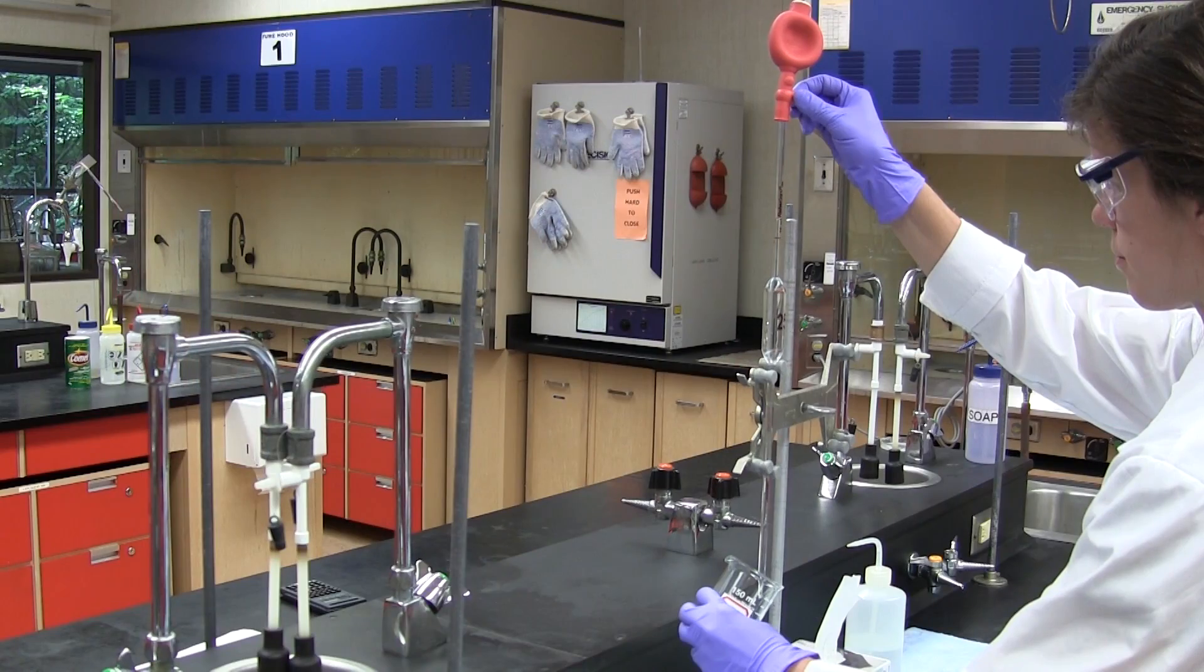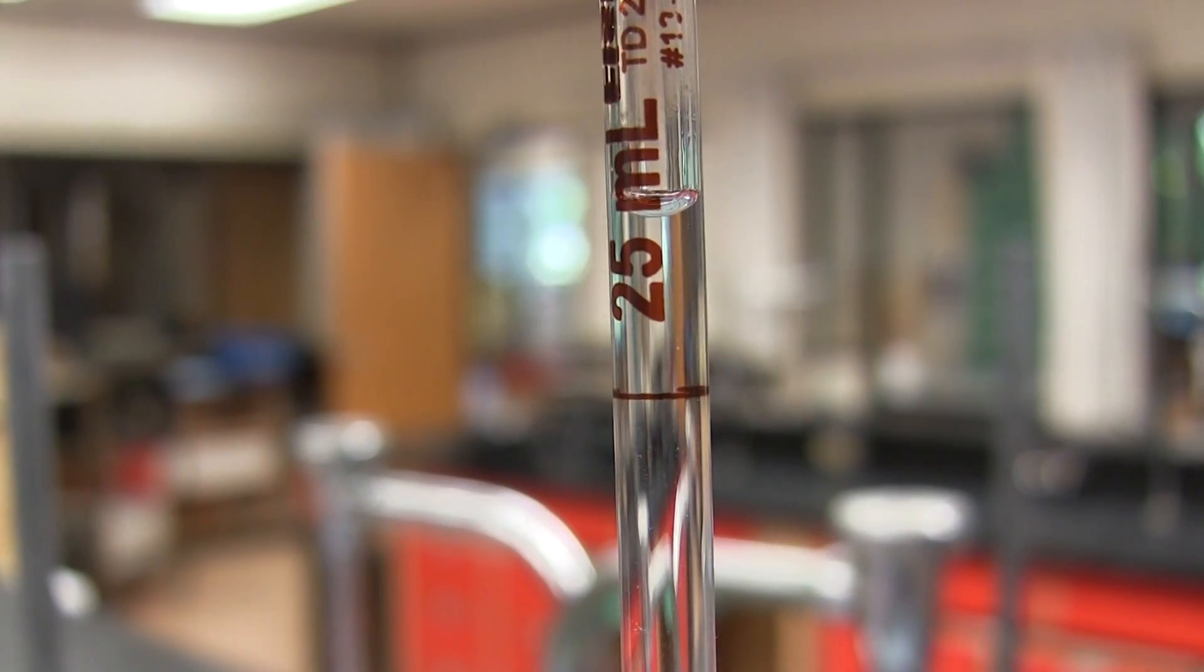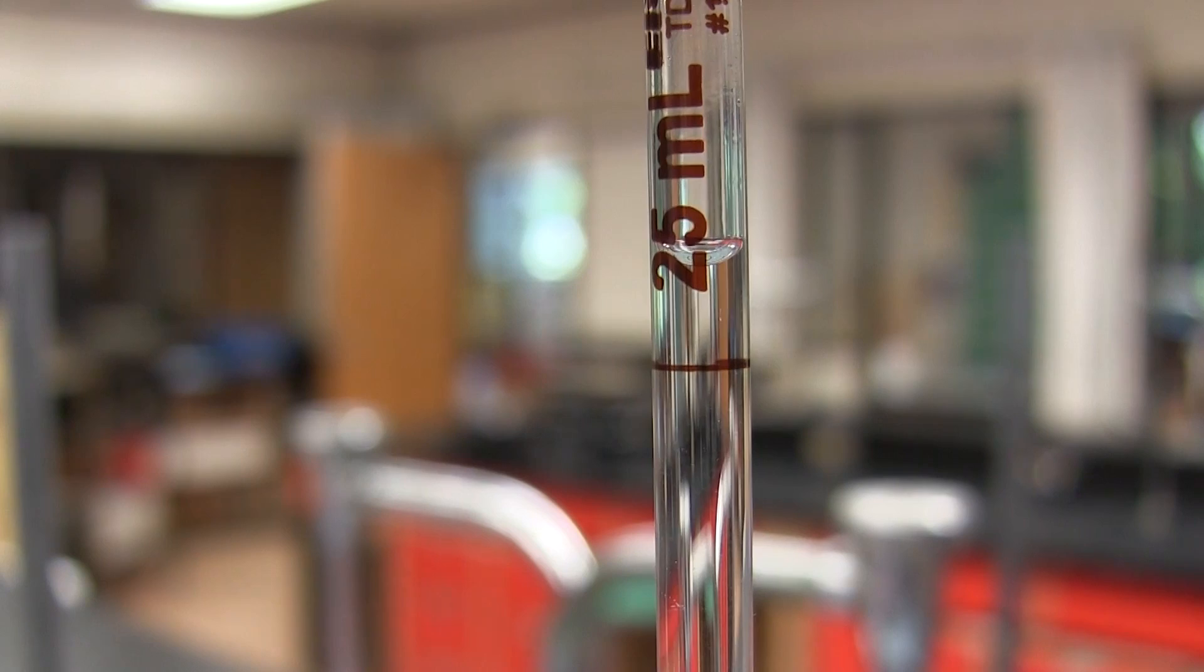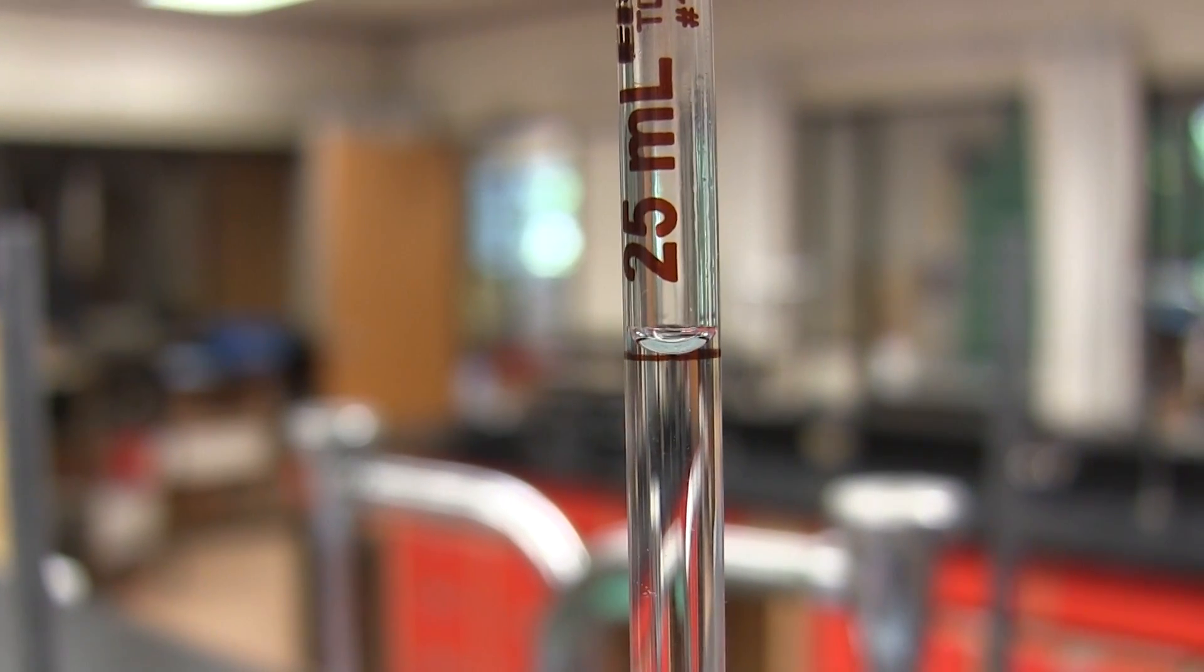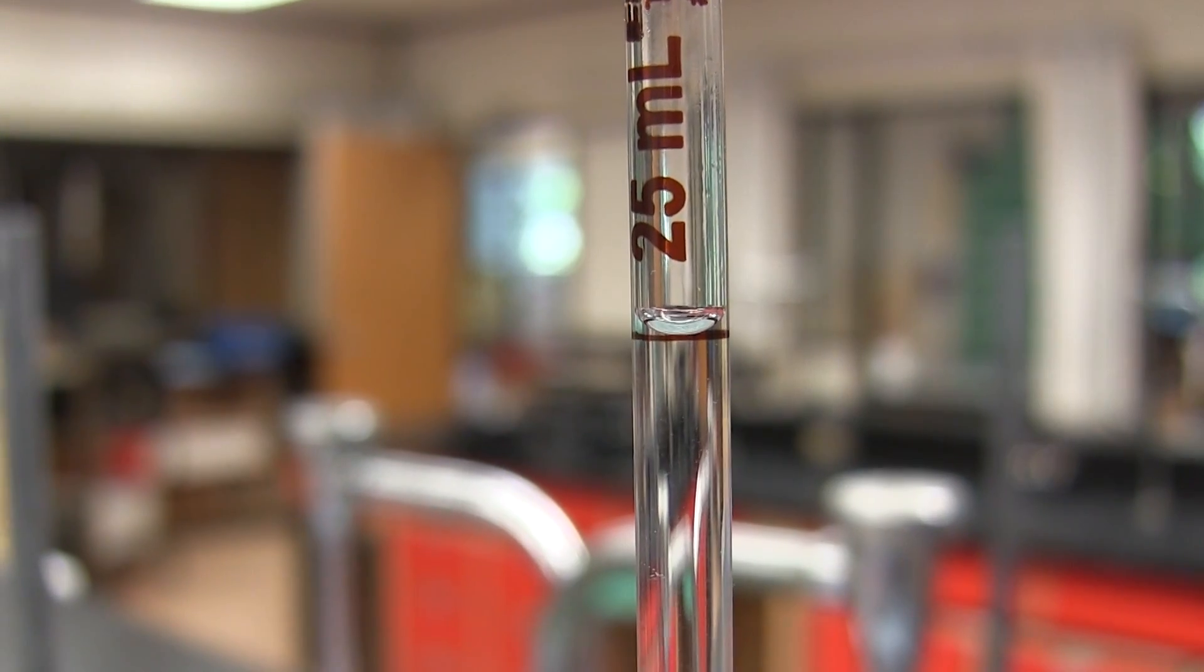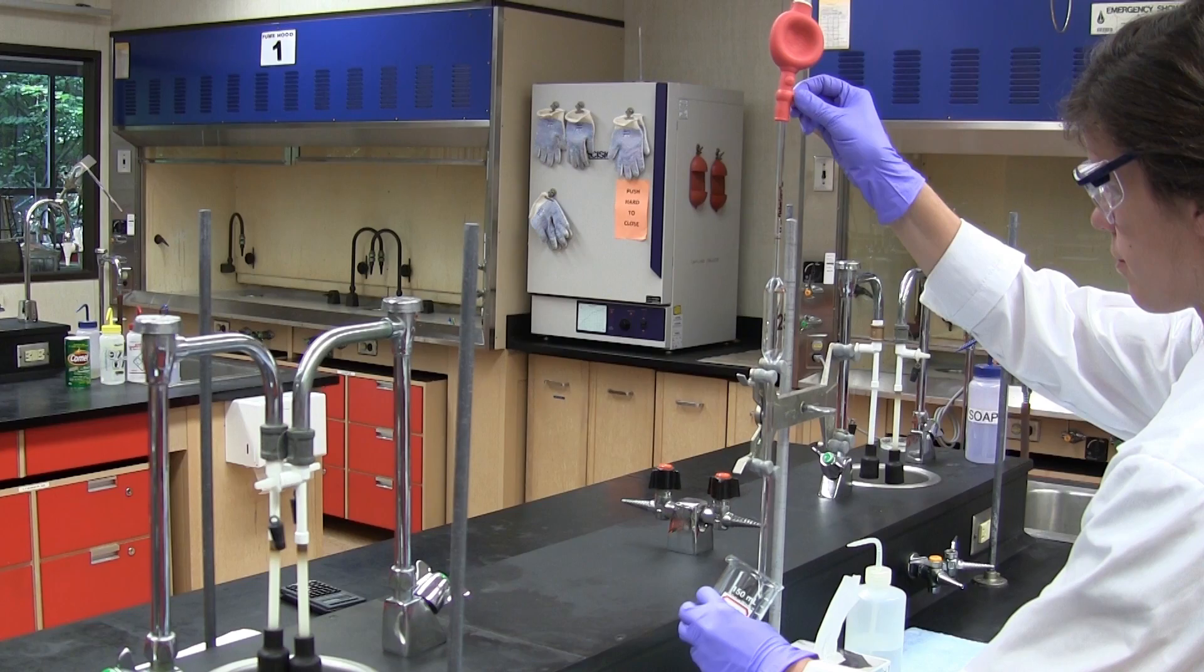Holding the tip of the pipette against the inside surface of the beaker the liquid is allowed to slowly run out of the pipette until the meniscus is resting on the calibration mark. Be sure to keep your eye level with the meniscus when doing this.